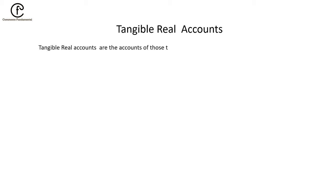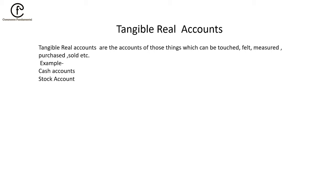Tangible Real Accounts are the accounts of those things which can be touched, felt, measured, purchased, sold, etc. For example, cash, stock, furniture account, land account, building account, etc. These are all tangible real accounts.